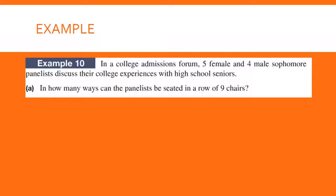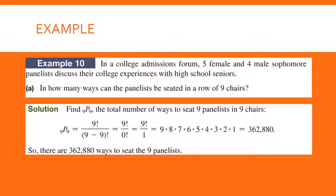Here's another example with multiple parts — pause as you come to each part and then resume to check your answer. For part A, we want to seat nine people in nine chairs and find how many different arrangements we could get. That's straight up nine factorial, which gives 362,880 ways to order nine people in a row of nine chairs.